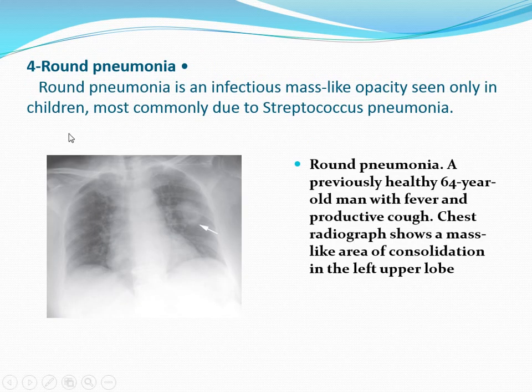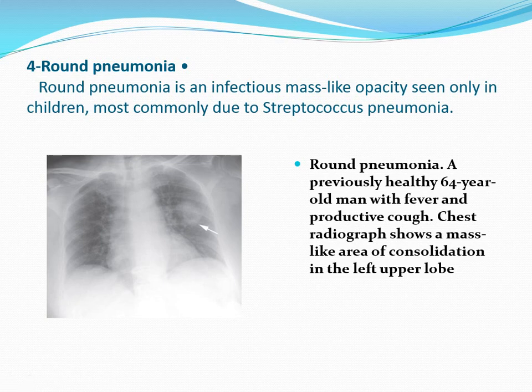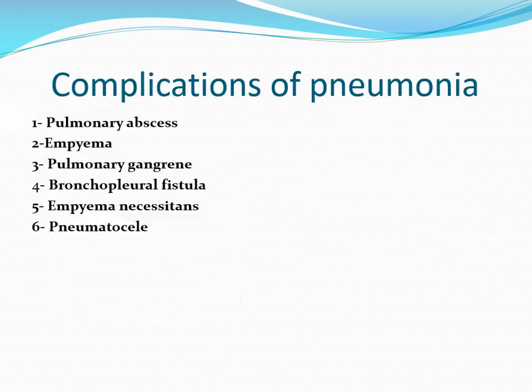Round pneumonia is most commonly due to Streptococcus pneumoniae. Chest radiograph shows a mass-like area of consolidation in the left upper lobe — classically described as only in children, though it can be seen in adults as well.